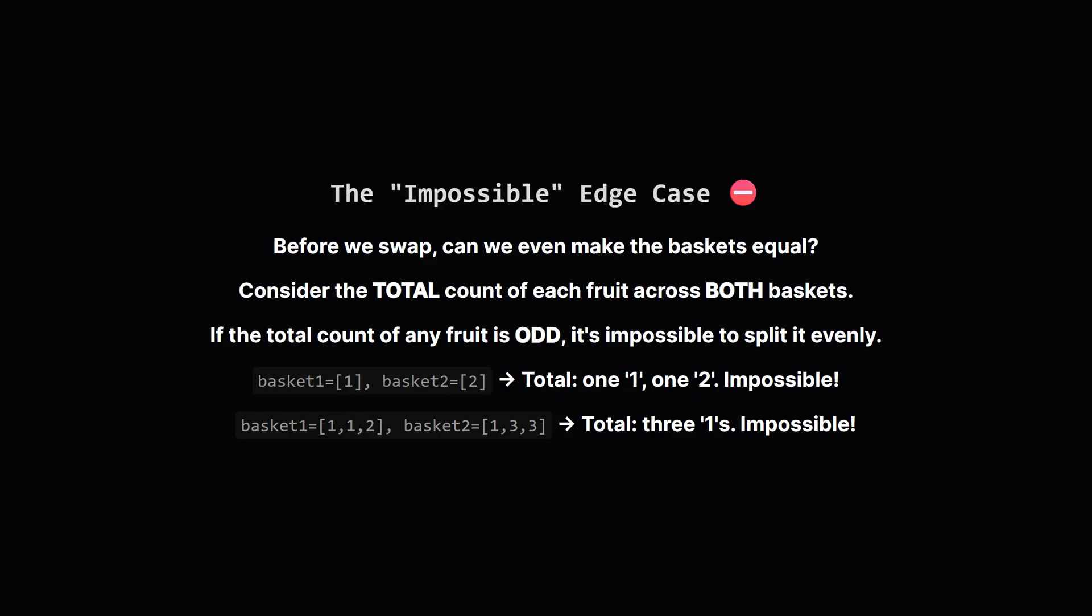Okay, before we even start thinking about swapping, we have to ask a critical question. Is a solution even possible? Let's think about the total number of fruits. If we combine both baskets, the total count of each specific fruit, like apples, must be an even number. Why? Because if you have an odd number of total apples, say three, you can never split them evenly into two baskets. One will always have more than the other. So, our very first step should be to check this. If any fruit has an odd total count, we immediately know it's impossible and can return negative one.